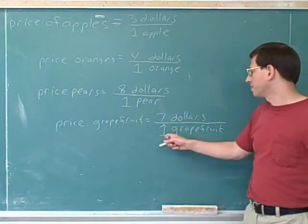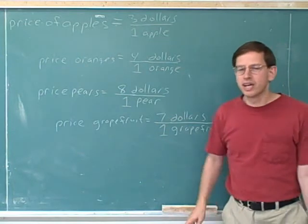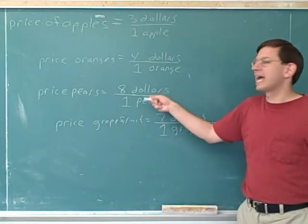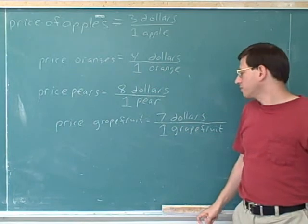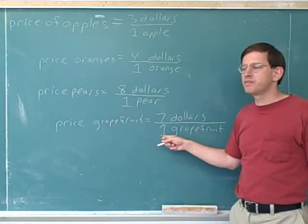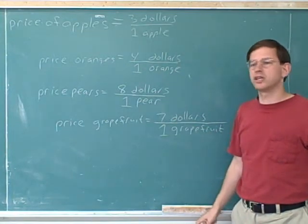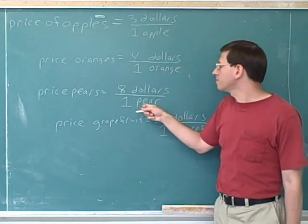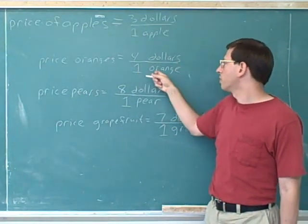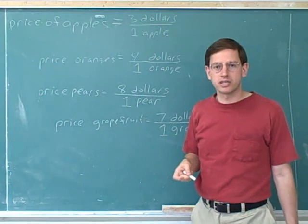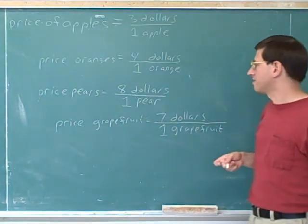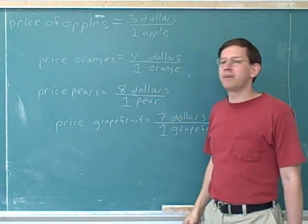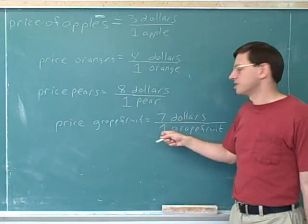If you buy one grapefruit, it will cost you seven dollars. Now you can see why it's useful to have a number on both the top and the bottom. Even though mathematically we don't need to write down this number one, writing it down helps us interpret these ratio units. It reminds us that one grapefruit costs seven dollars, one pear costs eight dollars, one orange costs four dollars, or one apple costs three dollars. It's very useful to have a number with both the unit on top and the unit on the bottom of the ratio.